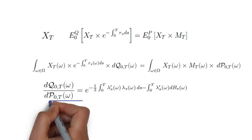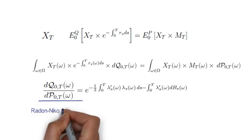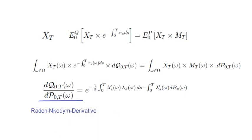The left-hand side stands for the so-called Radon-Nikodym derivative. It measures the statistical distance between the risk-neutral probability of an event and the actual probability in data.